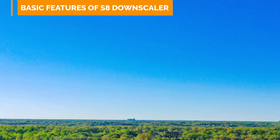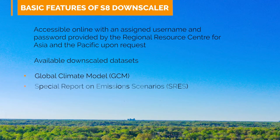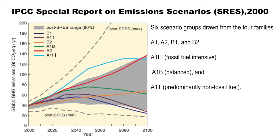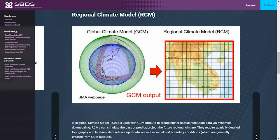The S8 Downscaler interface is accessible online with an assigned username and password provided by the Regional Resource Center for Asia and the Pacific upon request, as long as each user presents a valid reason for the request. The portal contains complete spatial downscale datasets from the IPCC. Downscaling can be done using a global climate model, special report on emission scenarios, representative concentration pathways, as well as a coupled model intercomparison project, and a regional climate model.